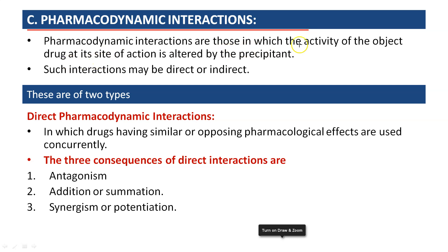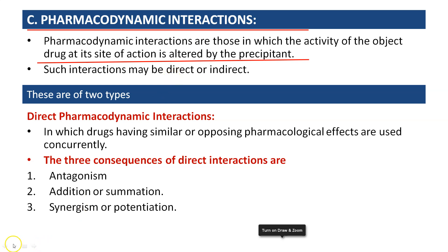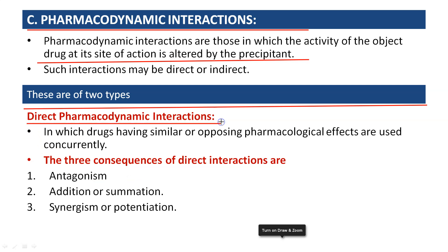Pharmacodynamic interactions are those in which the activity of the object drug at its site of action is altered by the precipitant drug — similar to what we saw in pharmacokinetic interactions. Such interactions may be direct or indirect. There are two main types: direct pharmacodynamic interactions and indirect pharmacodynamic interactions.